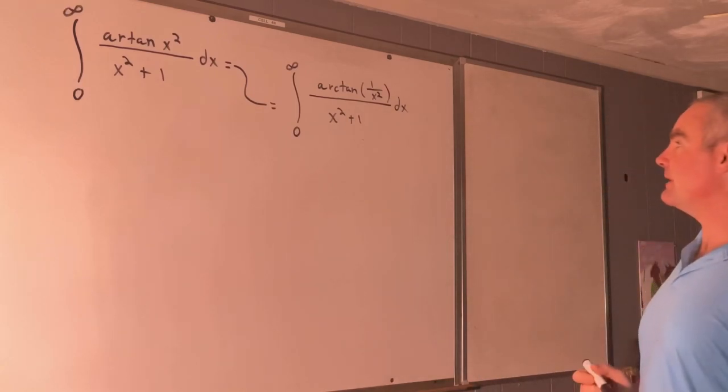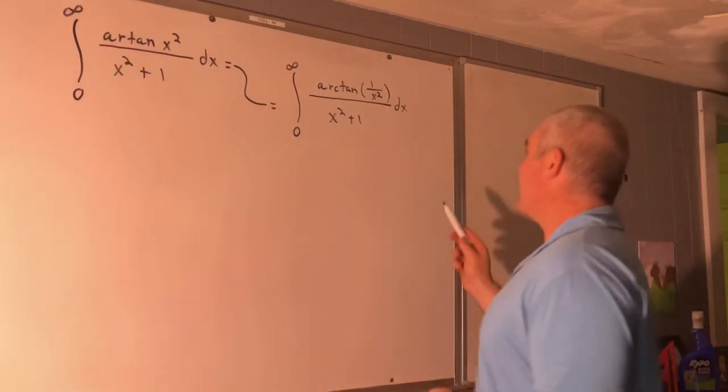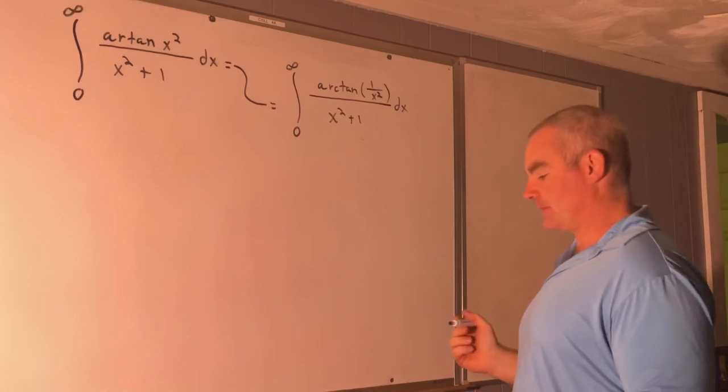So now we're going to be deriving a trig identity. So I would like an identity for arc tangent 1 over x squared.